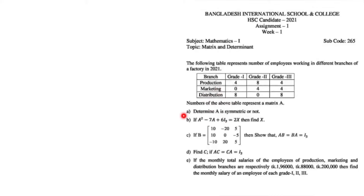We generally call this operation the transpose, represented as A^T. According to the symmetric matrix definition, A^T equals A. If this condition holds, then A is a symmetric matrix. Looking at the solution, when we transpose matrix A it does not look equal to A — therefore A is not a symmetric matrix.